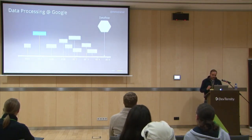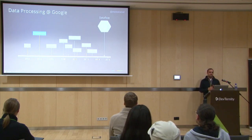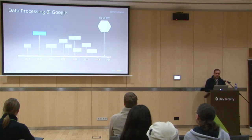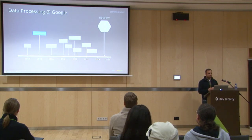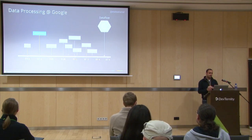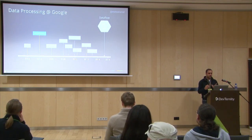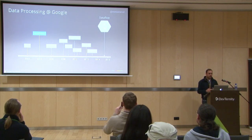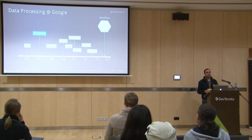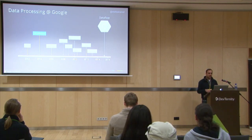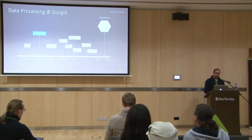The road to Dataflow. Everything started with MapReduce — this was back in 2004 when the MapReduce paper came along. If you look at the timeline of all the different features and papers we had at Google, we had Bigtable, Dremel, Flume Java, and Millwheel. There was a progression of features and papers that eventually led to Dataflow, but everything started with MapReduce.